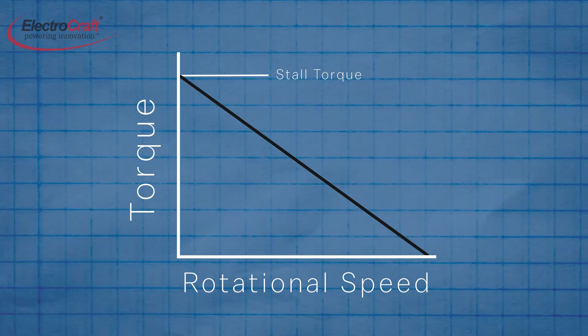The curve slopes downward until it intersects with the X axis, when torque is zero and speed is at its maximum. This point is known as the no-load speed, the speed when running at nominal voltage and zero load.